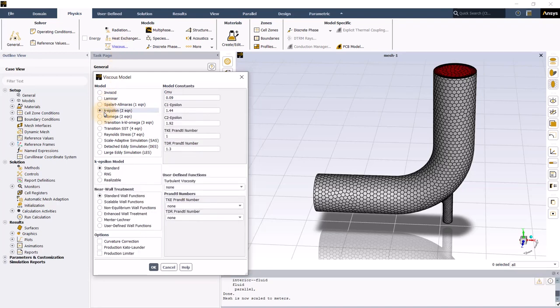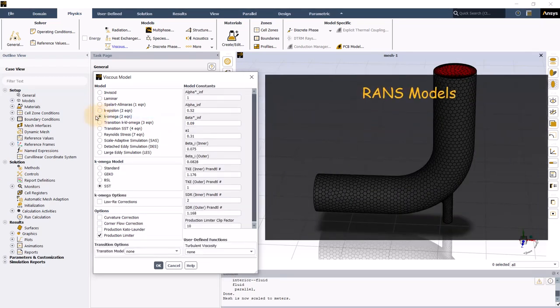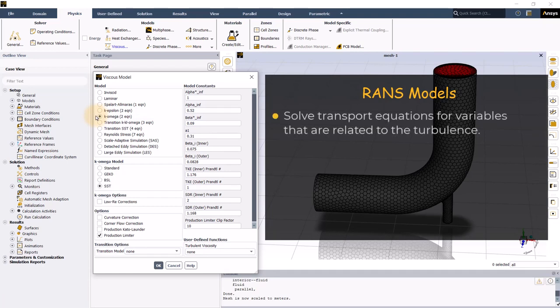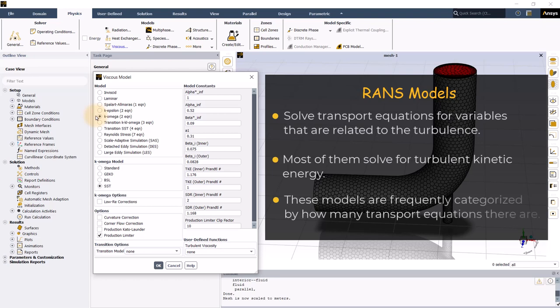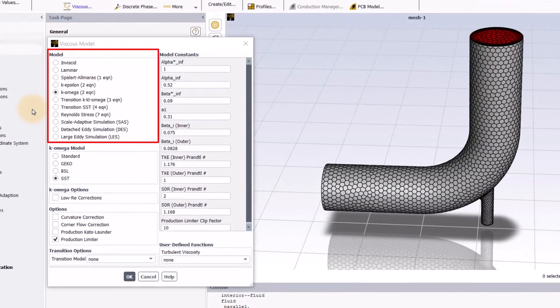And all the available turbulence models are listed in the panel. Earlier in this video, we talked about RANS models. RANS models solve transport equations for variables that are related to the turbulence. For instance, most of them solve for the turbulent kinetic energy. Anyway, these models are frequently categorized by how many transport equations there are. When you see the panel, all the models with the number of equations listed in parenthesis are RANS models.